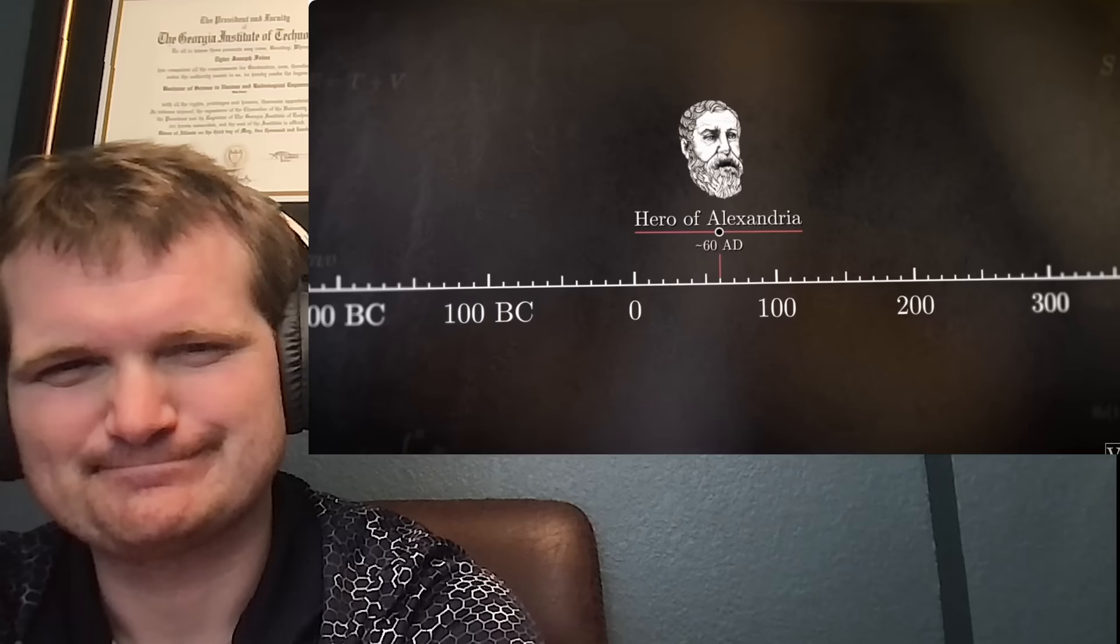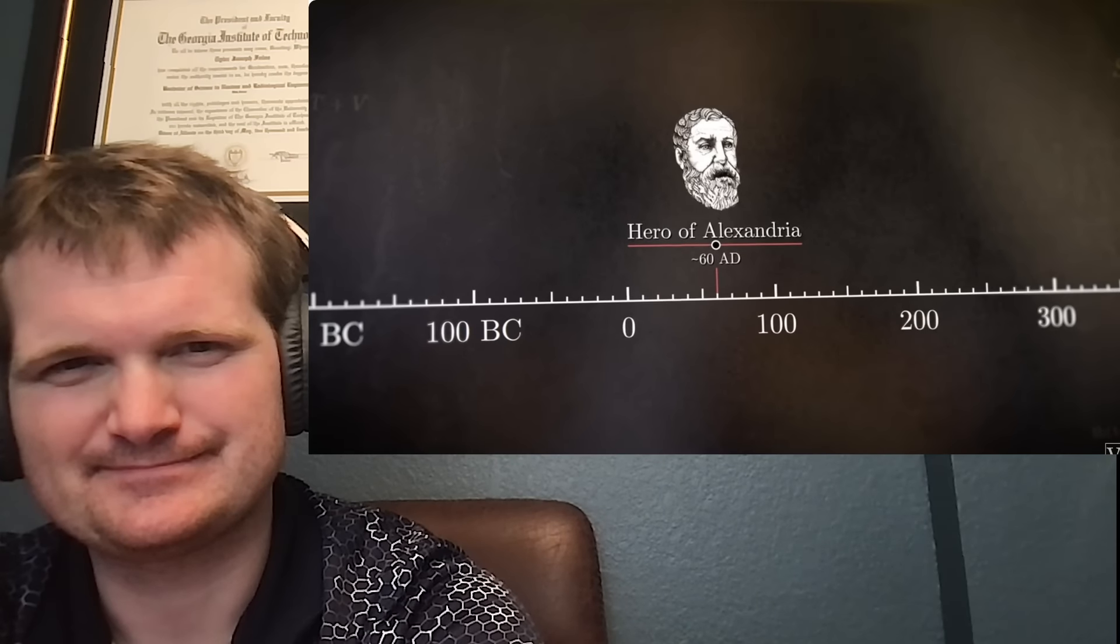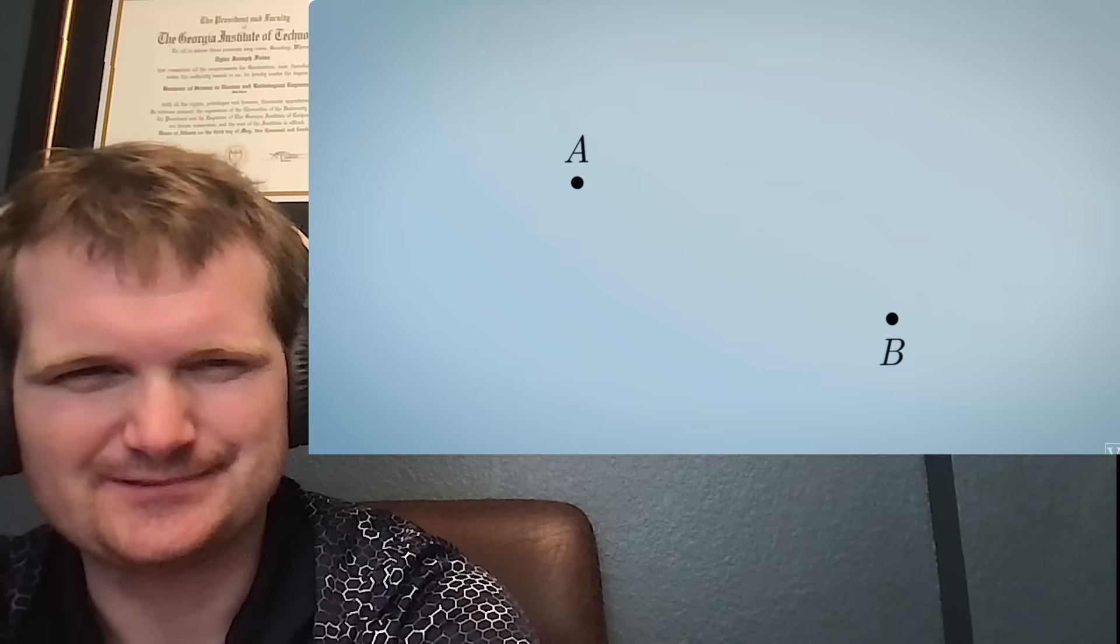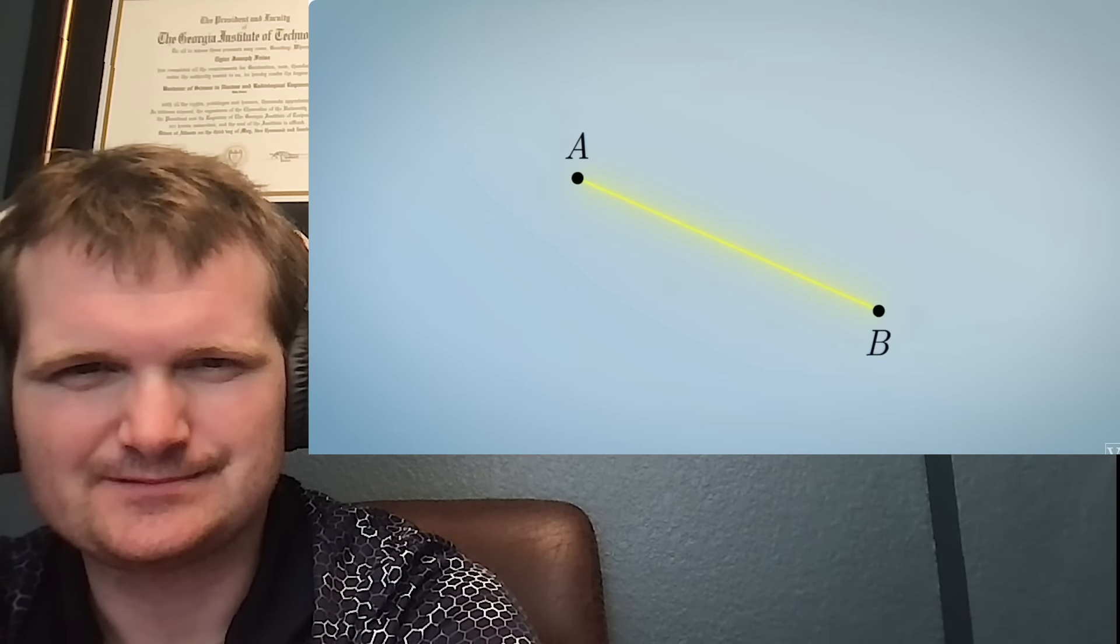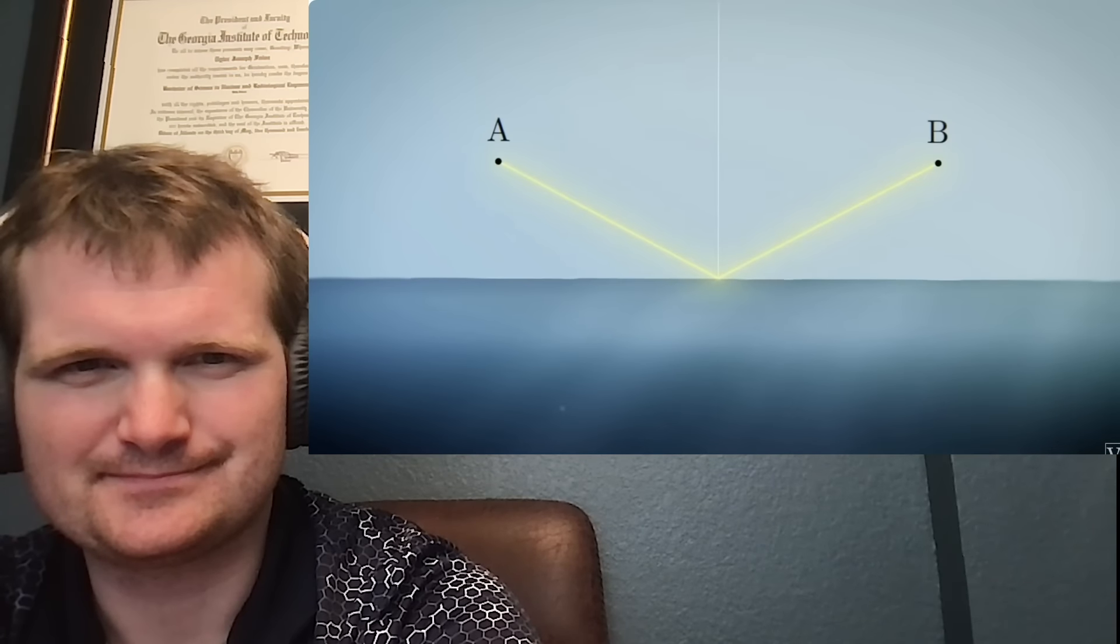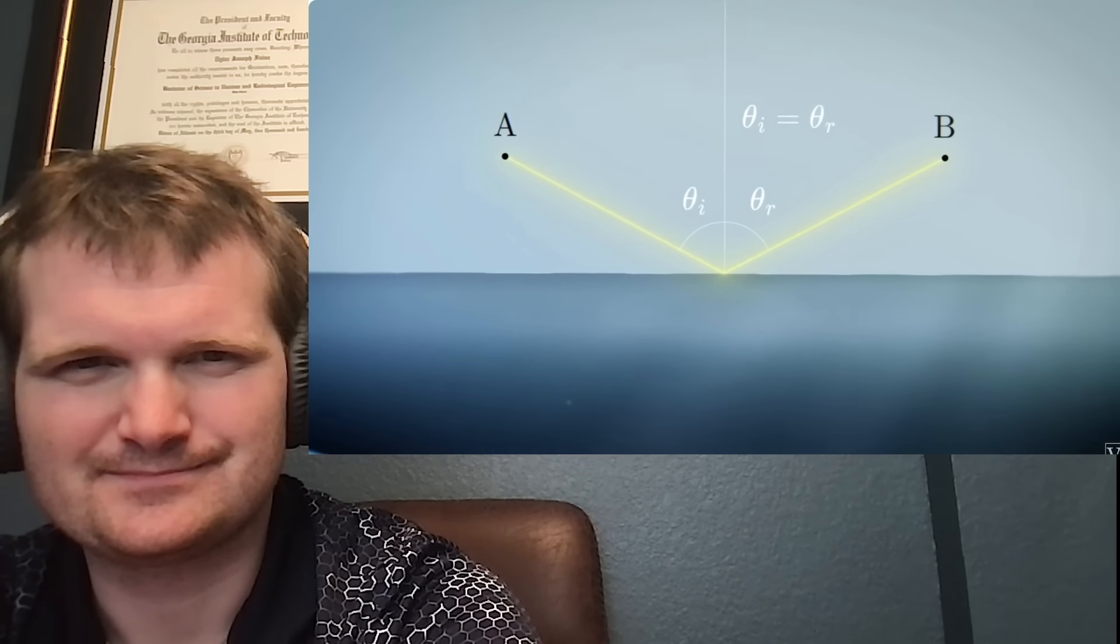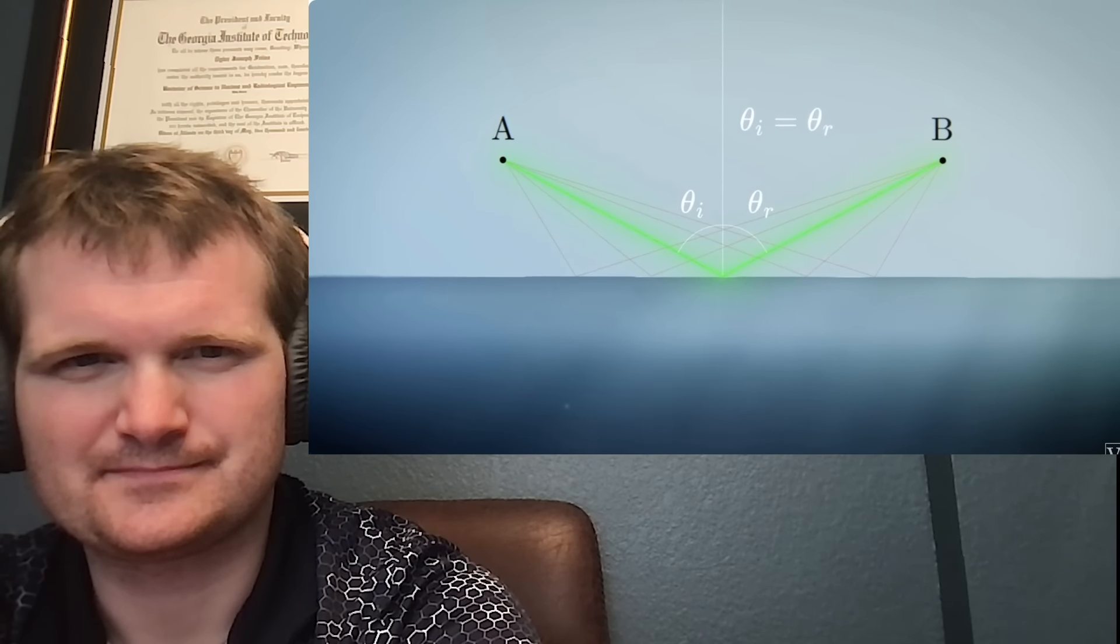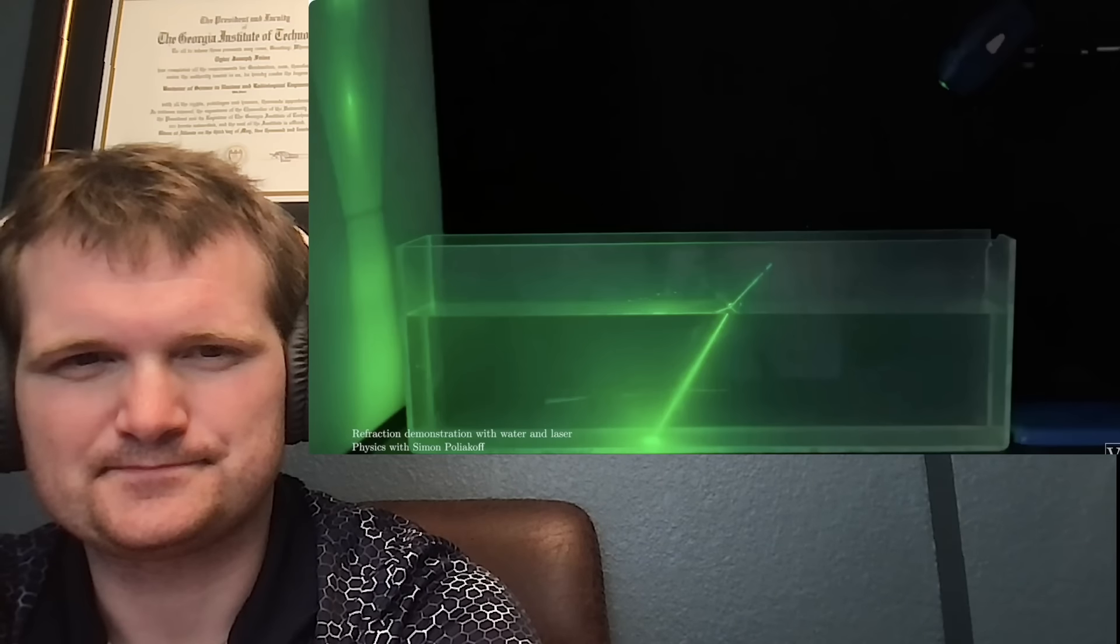This was contemplated by Hero of Alexandria in the first century AD. He realized that in a single medium like air, light always follows the shortest path. A consequence is that when light reflects, say, off a lake, the angle of incidence is always equal to the angle of reflection. Any other path between the start and end points would be longer. But when light goes from one medium into another, like from air into water, it bends in a peculiar way. It refracts.